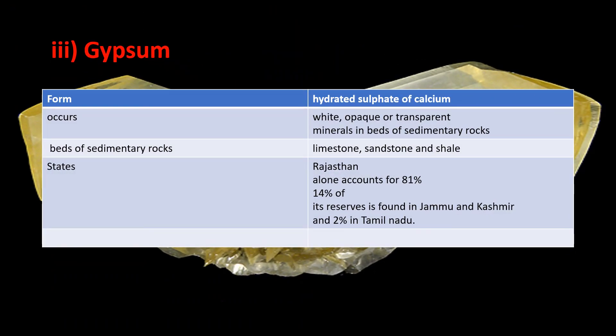Gypsum is a white, opaque, sedimentary rock. It is Hydrated Sulphate of Calcium. Major producing states: Rajasthan contributes 50%, Jammu and Kashmir, and Tamil Nadu contributes 2%.